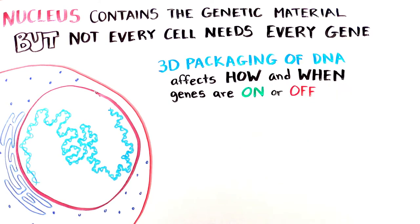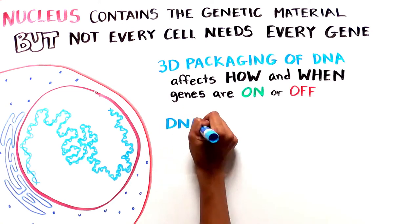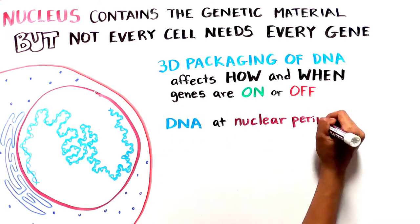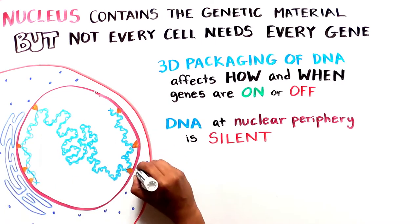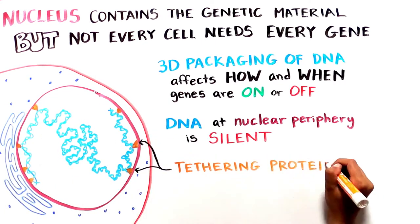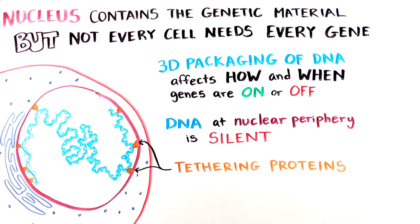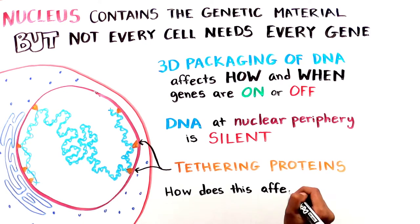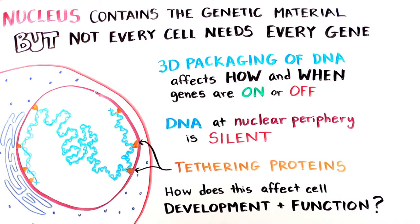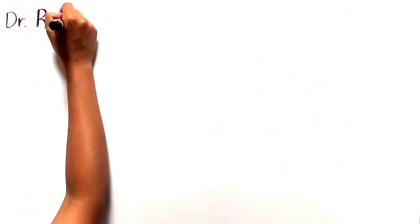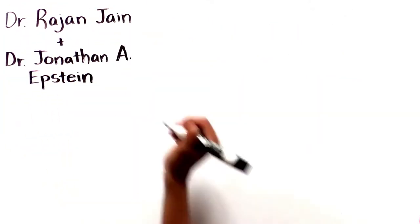It has been known for many years that genes contained in DNA held close to the periphery of the nucleus are not turned on and are instead kept silent. Some proteins can help to tether DNA to the nuclear periphery, but how this might affect the function or development of the cell has been unknown.